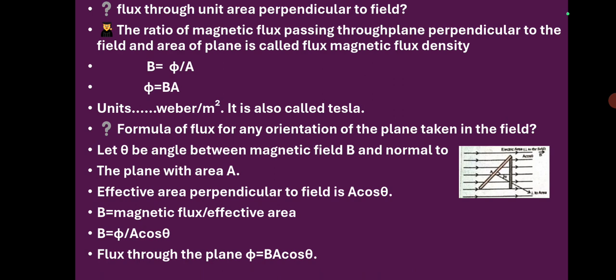Now let us find the formula for flux for any orientation of a plane taken in the field. As shown in the diagram, theta is the angle between magnetic field B and the normal to the plane with area A. The effective area perpendicular to the field is A cos theta. Since B = φ / (A cos theta), by cross multiplication we get the formula: φ = B A cos theta. This is the formula for flux for any orientation of the plane in the field.